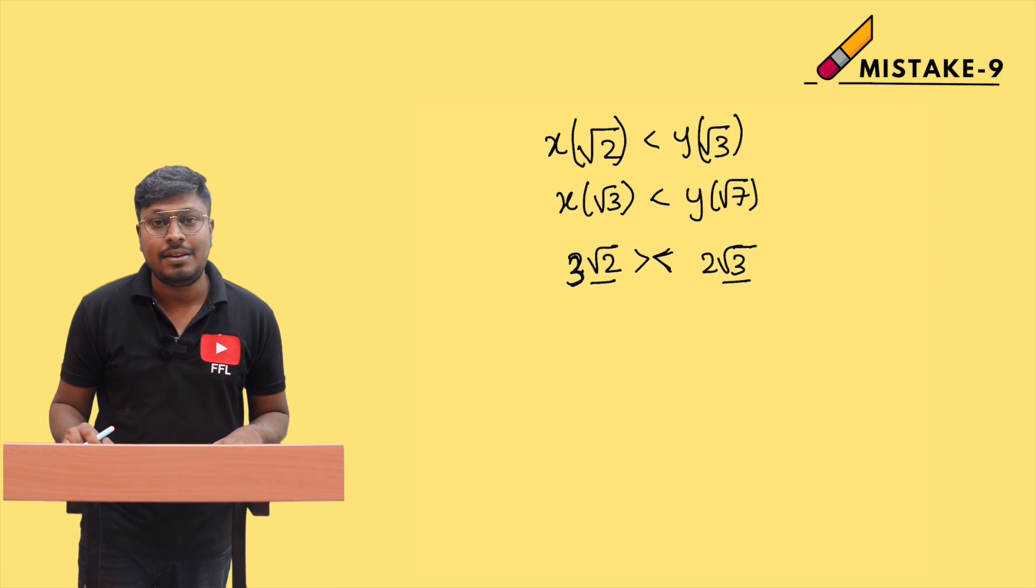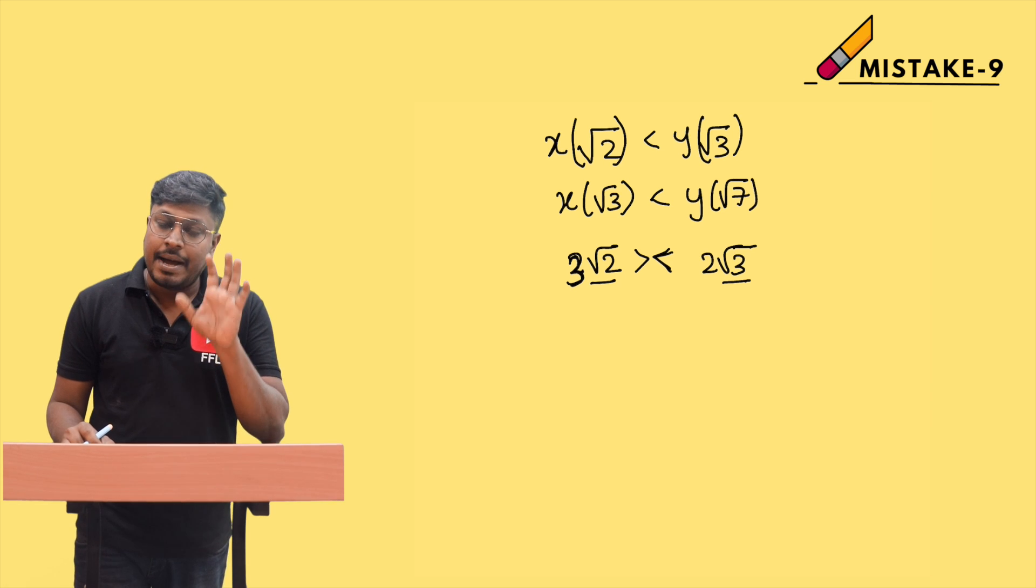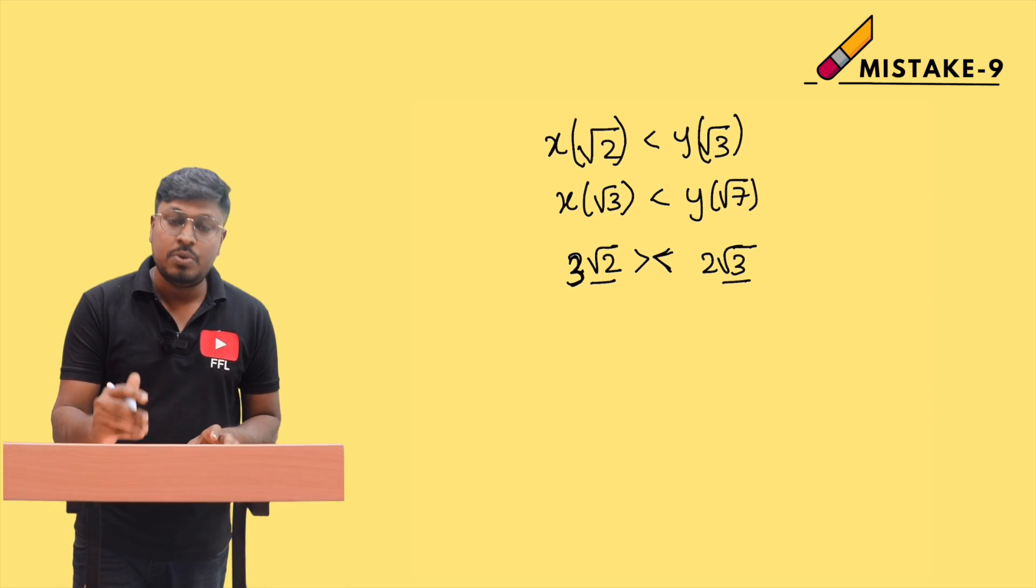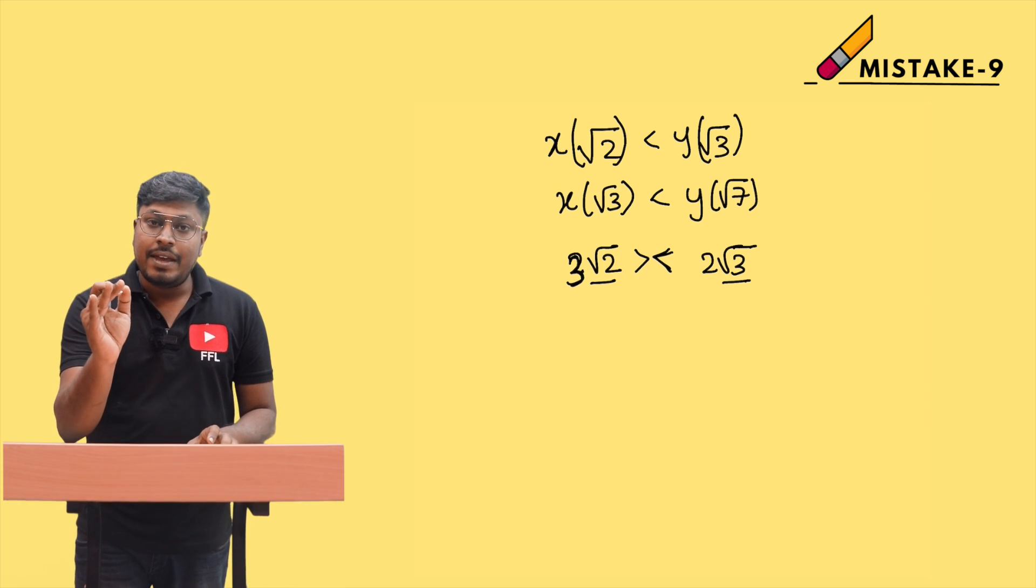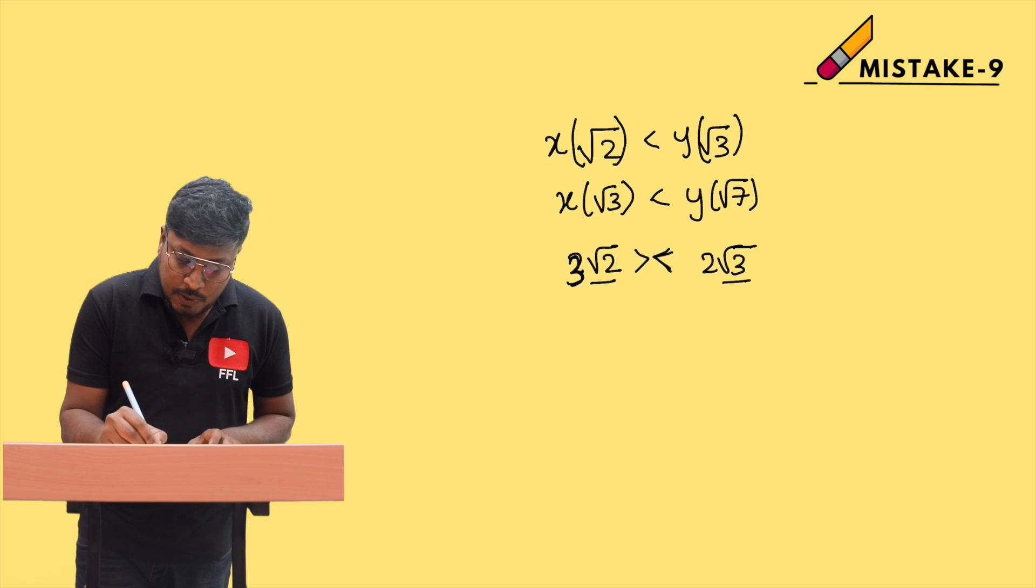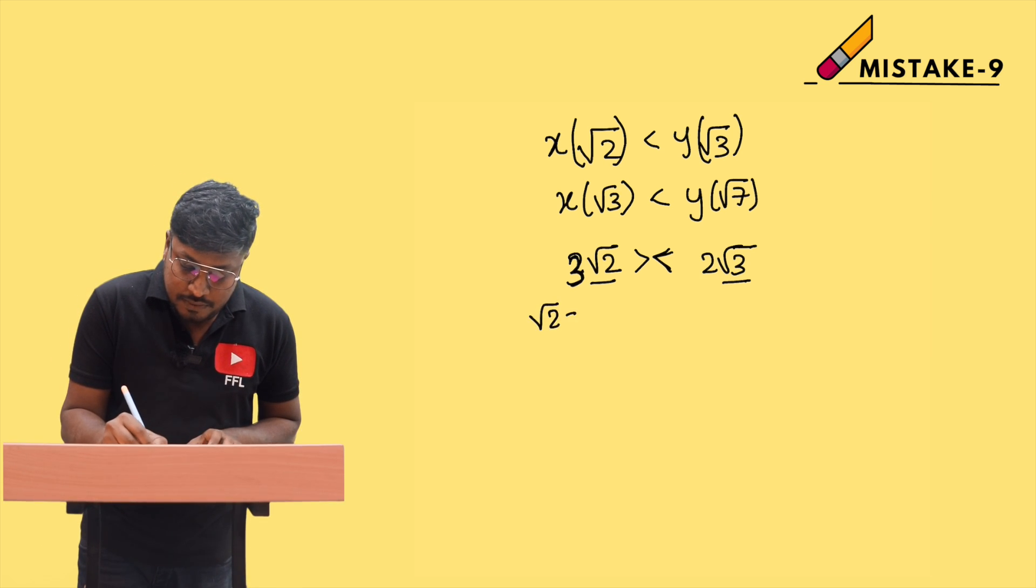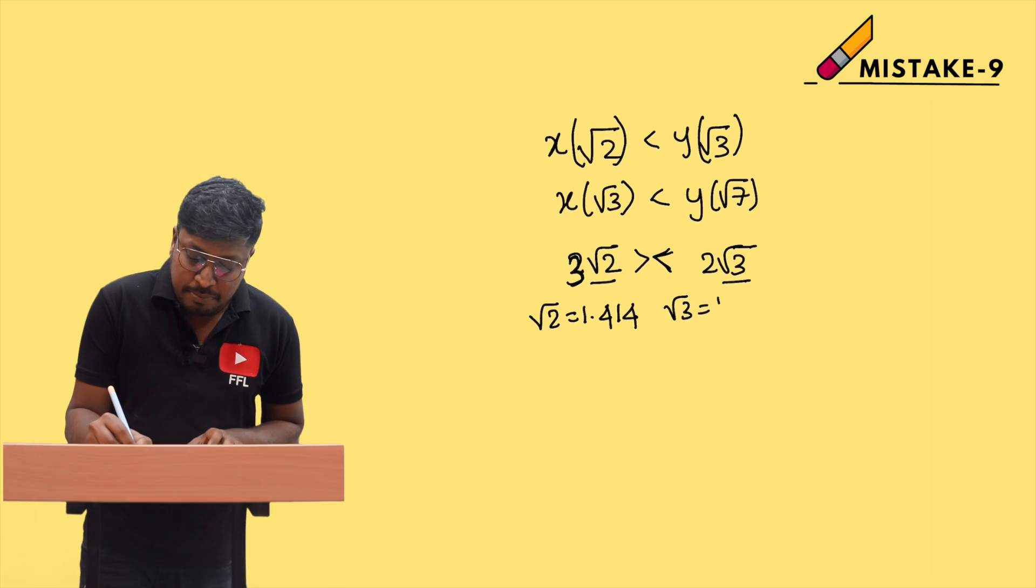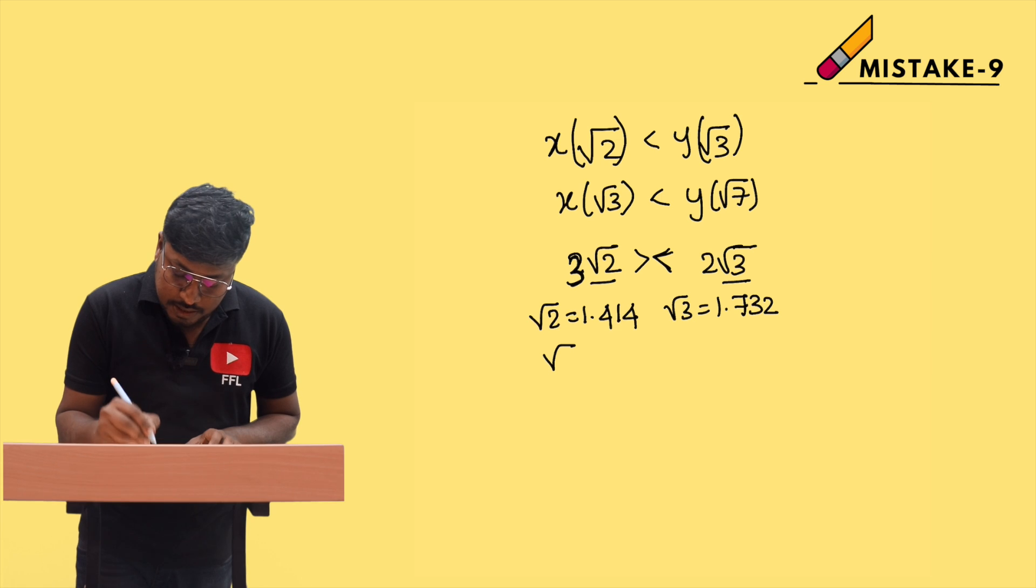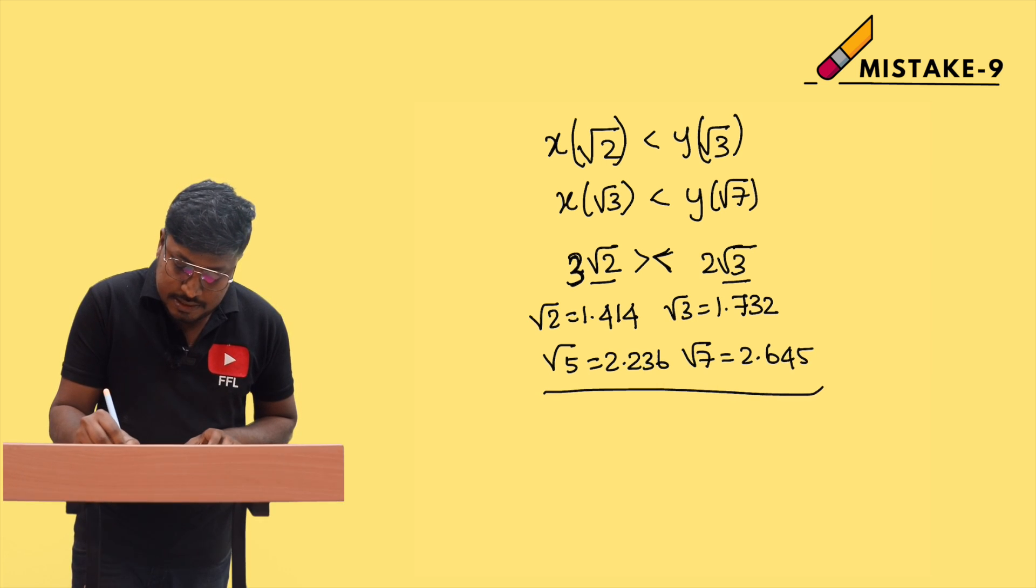Try to memorize the values for √2, √3, √5, and √7. √2 is 1.414, √3 is 1.732, √5 is 2.236, and √7 is 2.645.